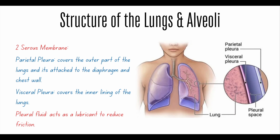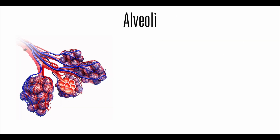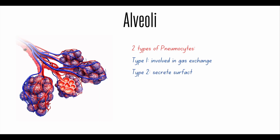This is very important — I guarantee you will see a question about this, or about surfactants. The alveoli has two types of pneumocytes: Type 1 is involved in gas exchange, while Type 2 is involved in secretion of surfactants. The main function of surfactants is to prevent the alveoli from collapsing. I guarantee you will see a question about this on the TEAS exam.